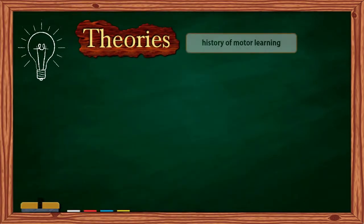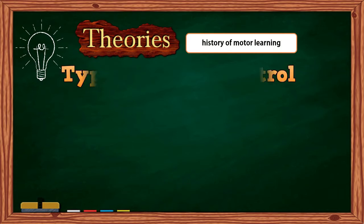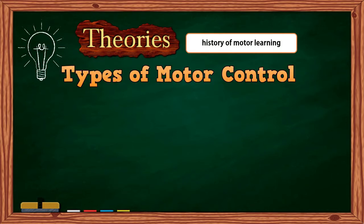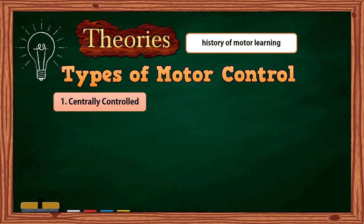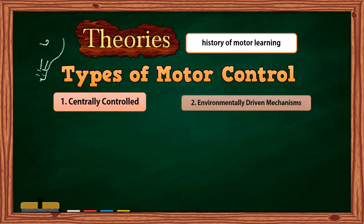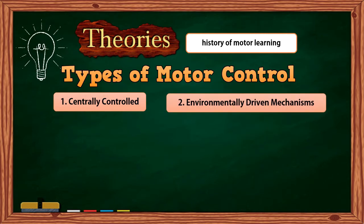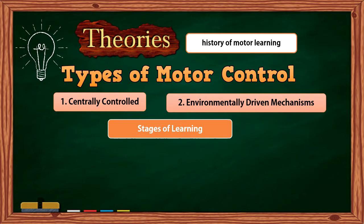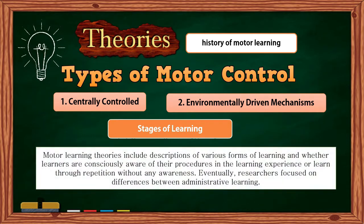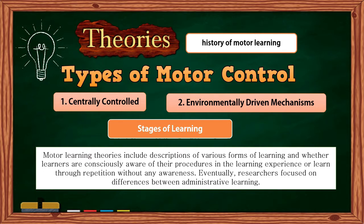Various theories have emerged with regards to the history of motor learning, and they were classified into two general classifications. These were categorized and related to the two major types of motor control, namely centrally controlled and environmentally driven mechanisms. Several theories are focused on stages of learning. Motor learning theories include descriptions of various forms of learning and whether learners are consciously aware of their procedures, or whether learning occurs through repetition without any awareness. Eventually, researchers focused on differences between adaptive learning.